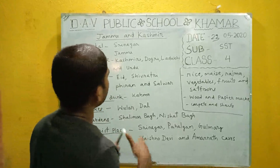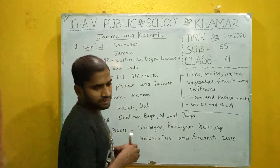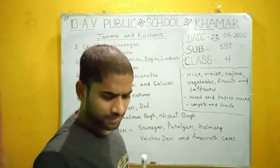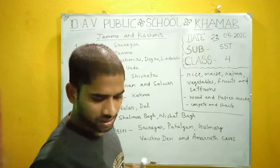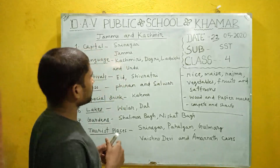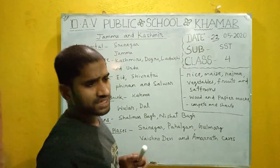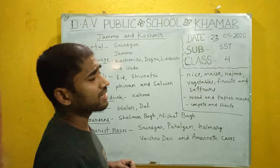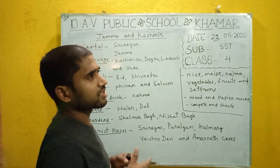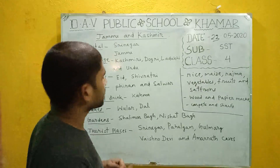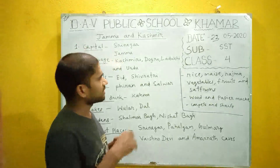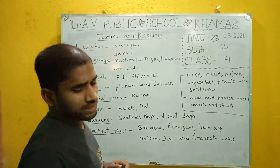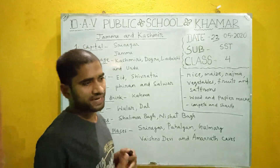Before we go to today's chapter, I will recall some questions from the previous class. Which are the sources of many Himalayan rivers like the Indus, Ganges, Yamuna, and Brahmaputra? The answer is glaciers — glaciers are the main sources of these great rivers.